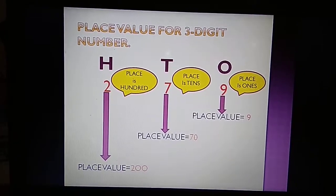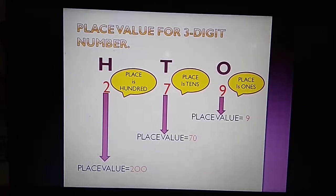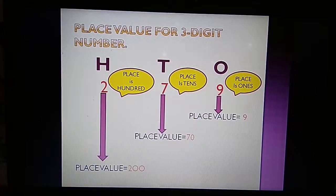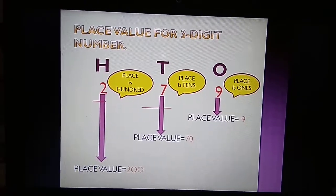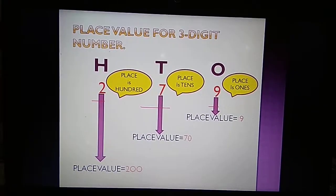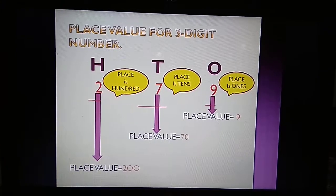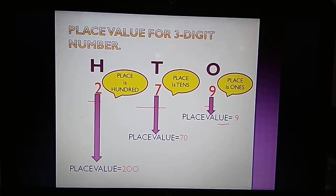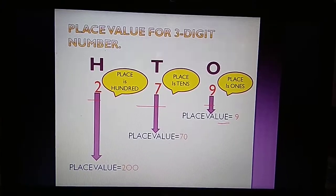Let us take some more examples. This time we have 3 digits: 2, 7, and 9. The place of 9 is 1s, thus its place value is 9. The place of 7 is 10s, thus its place value is 70.